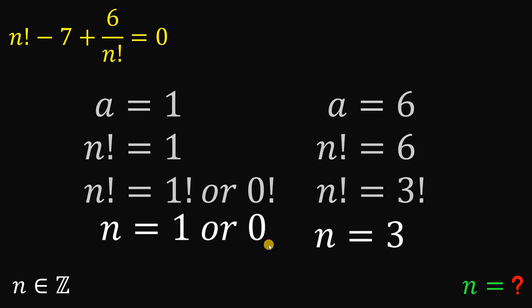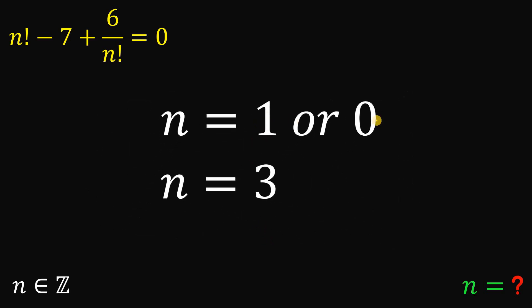Therefore, we found three possible values for n. We have n equals 0, n equals 1, or n equals 3.